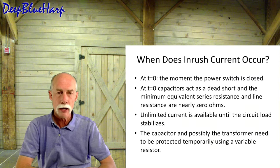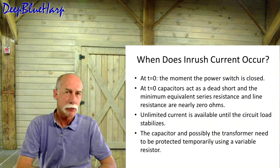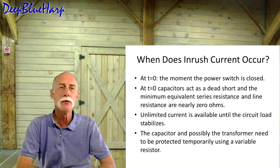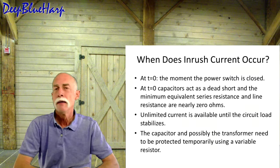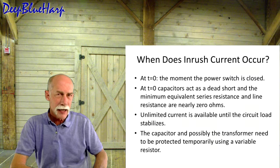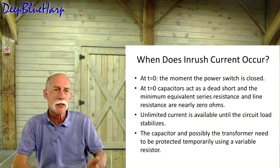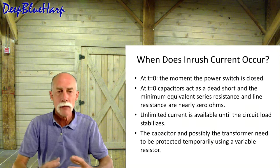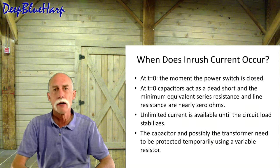It's all about inrush current. In the video I did for sizing a tube rectifier, the same principles apply to a diode rectifier. The instant the power switch is closed, the amount of current that's available to the transformer's primary side is infinite, because the capacitors in the unit act as a dead short at time equals zero. Milliseconds later, the capacitors will have enough charge on them.